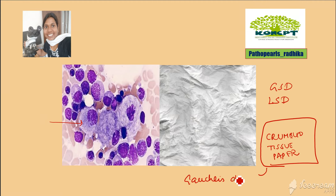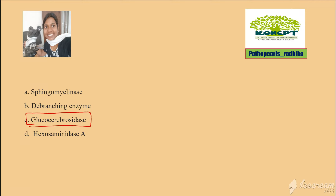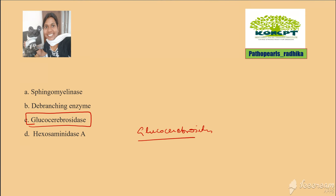So what is Gaucher's disease? Gaucher's disease is a lysosomal storage disorder. You have deficiency of an enzyme called glucocerebrosidase. Because of this deficiency, all your glucocerebrosides will accumulate inside your lysosomes.